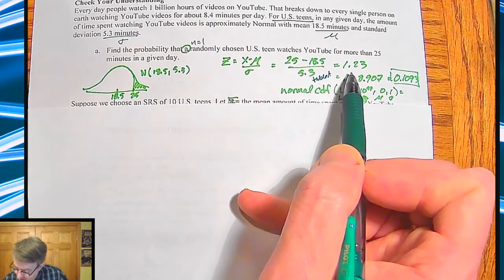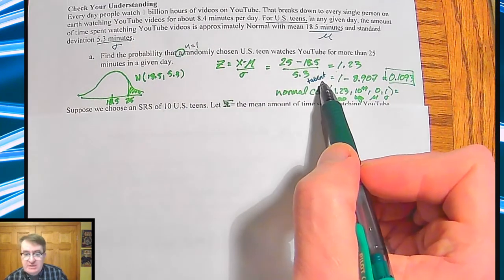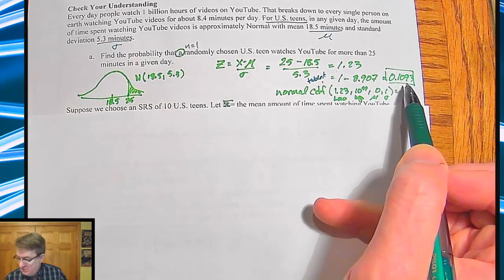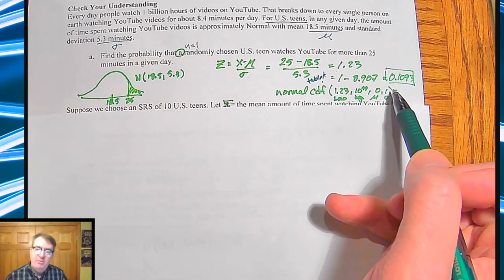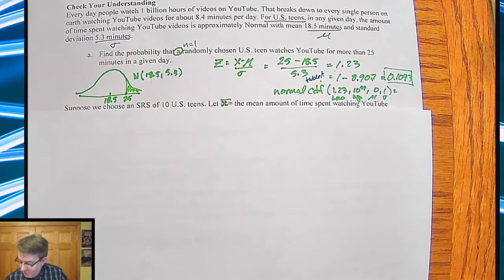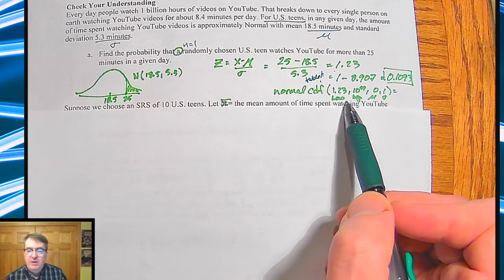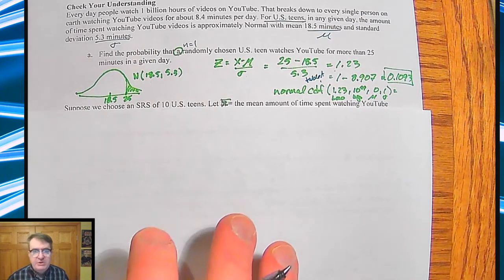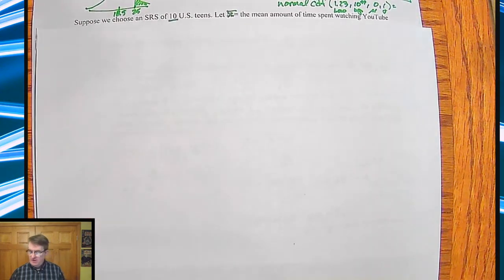So when we plug this in, we end up getting a Z-score of 1.23. Now, if you end up using table A, you're going to get 1 minus 0.907, so we get 0.093, or 9.3%, you have a probability of 0.093. And if you're going to use your calculator, normal CDF, 1.23, 10 to a huge power, 0, 1. So about a 10% chance that if you pick one student randomly, that they're watching at least 25 minutes a day on YouTube.